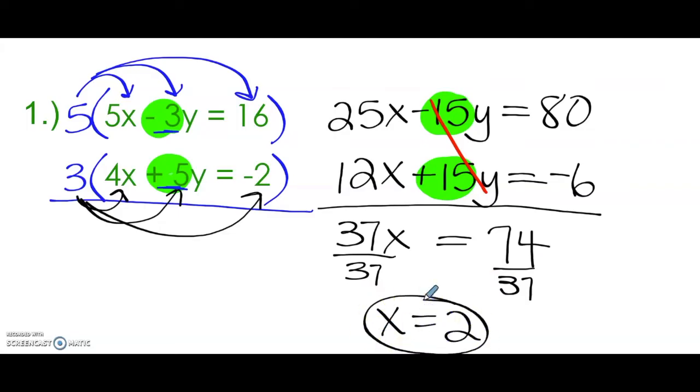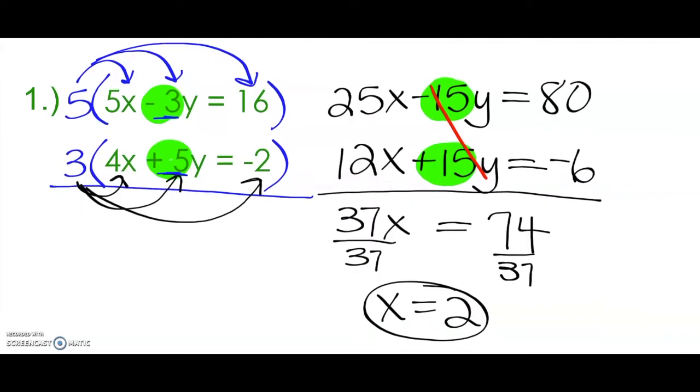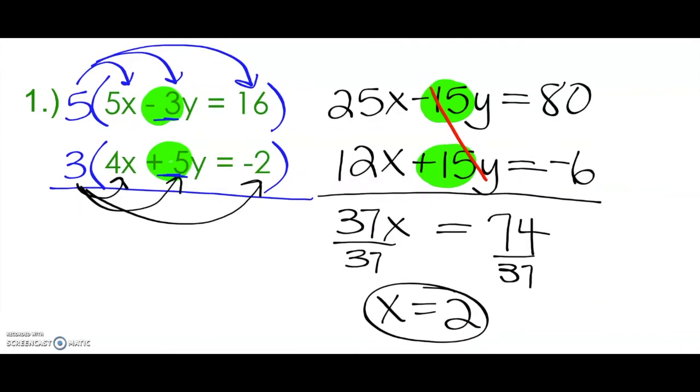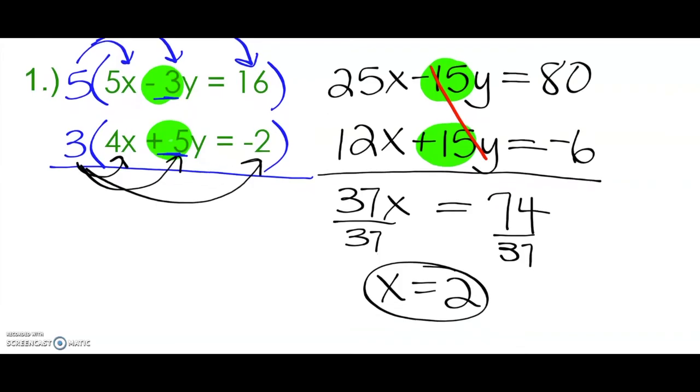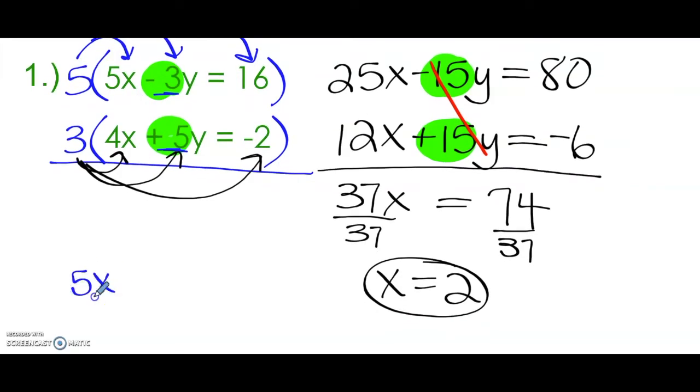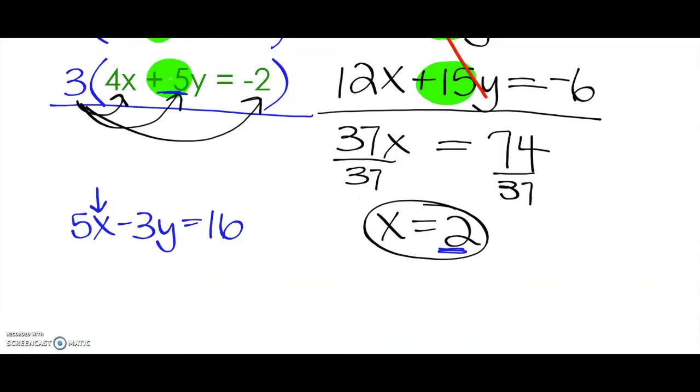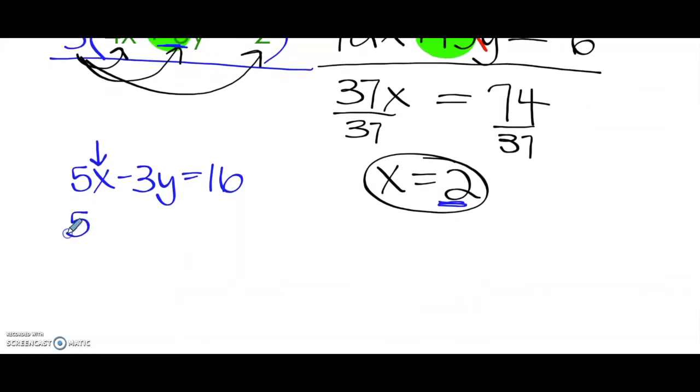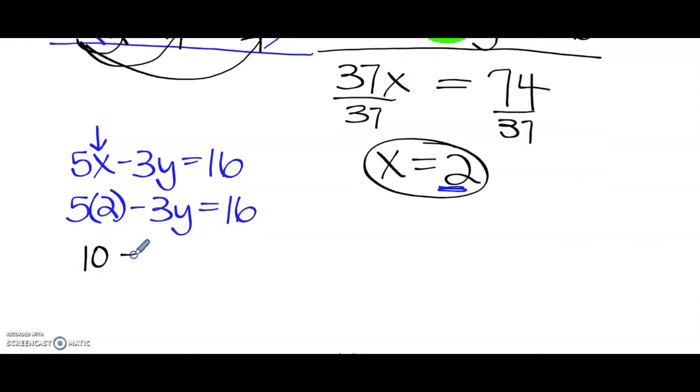So we've got our x coordinate. Let's go back and substitute 2 in for x to get our y value. So I'm going to use the top equation, 5x minus 3y equals 16. And I'm going to substitute 2 in for x. So 5 times 2 minus 3y equals 16. Now all I have to do is solve for y. So I'm going to multiply 5 times 2. That's going to give me 10 minus 3y equals 16.